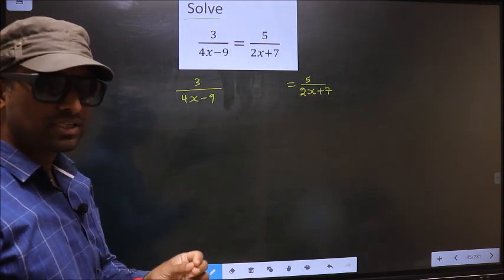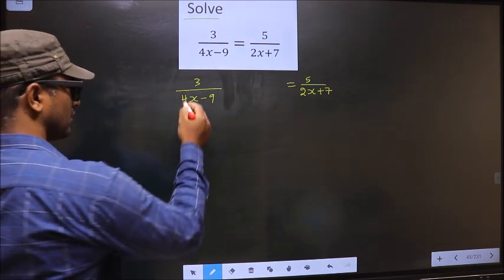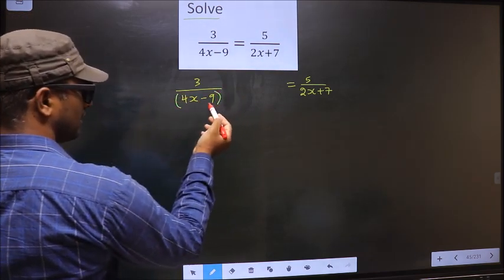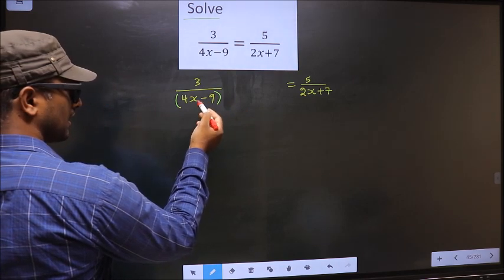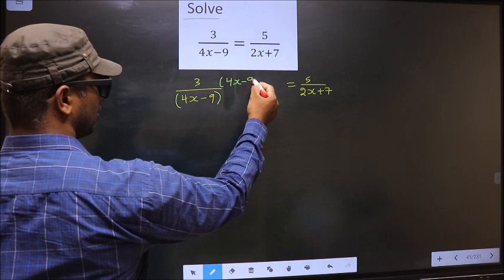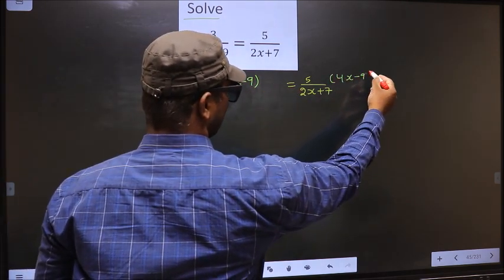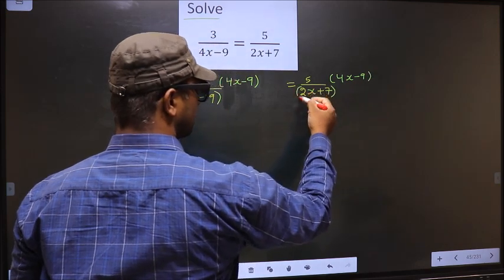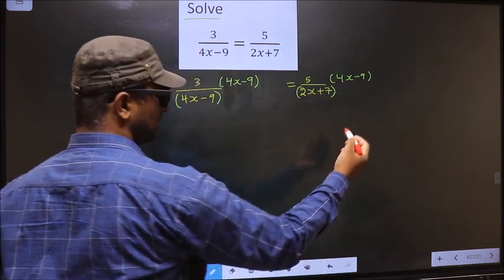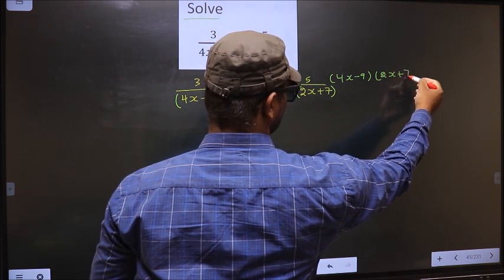For that, first we should get rid of the denominators, that is 4x minus 9. To remove 4x minus 9, we multiply by 4x minus 9 on both sides. Now in the same way, to remove 2x plus 7, we should multiply by 2x plus 7 on both sides.